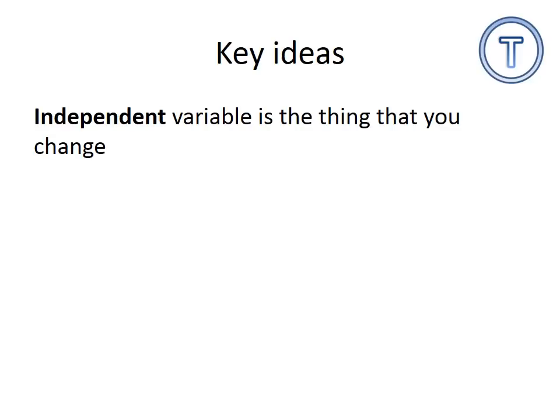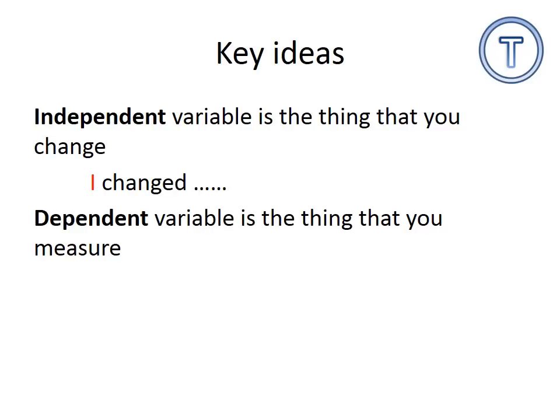The independent variable is the thing that you are changing in the experiment. So for example I changed is the independent variable. The dependent variable is the thing that you are measuring, it depends on the thing I have changed.